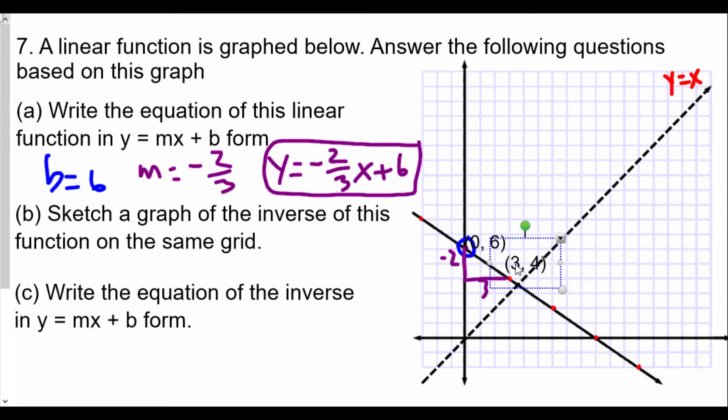This point here is 6, 2. The next point looks like 9, 0. This point down here looks like 12, -2. It makes sense because our slope is negative two-thirds. Going backwards, this coordinate will be -3, 8.